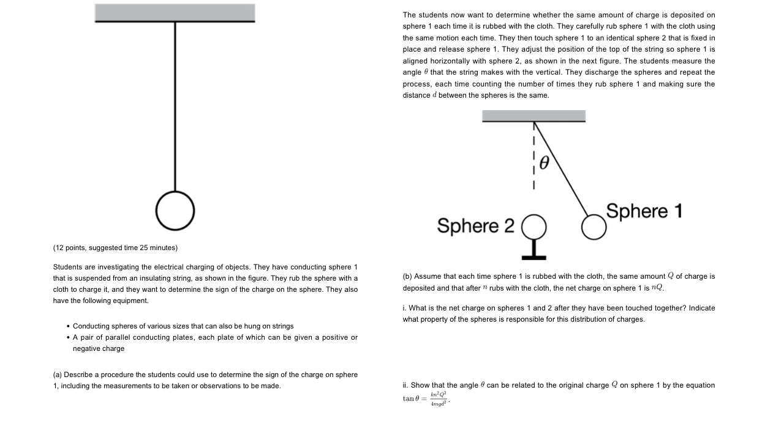So they do give you two possibilities. They give you some conducting spheres, that's one possibility, and then the other thing they give you is some parallel plates. I honestly can't think of a way you can do the first part, but the second part seems pretty straightforward. So since you can know which one is positive and which one is negative, essentially you can just take a couple parallel plates, charge them up.